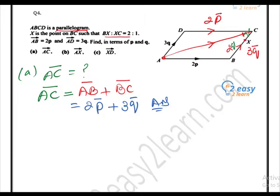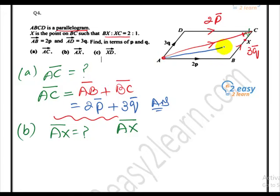Now part B. What is part B? AX. We have to find AX. So AX, find the arrow. First of all, we must do it. We must join it. And we have arrow.